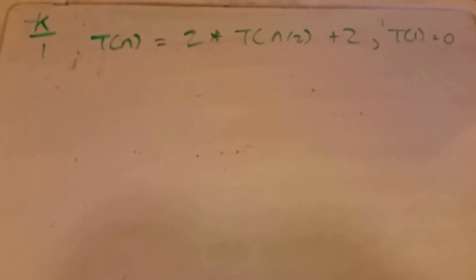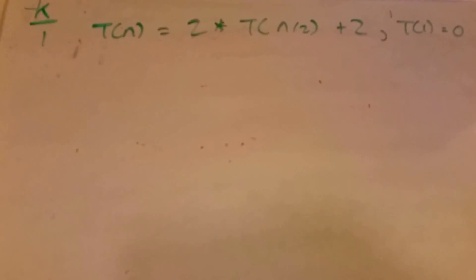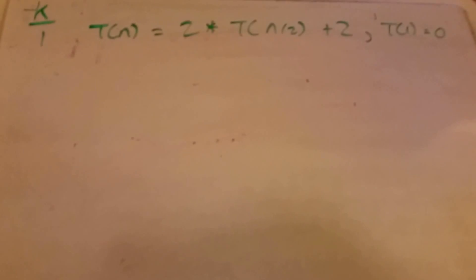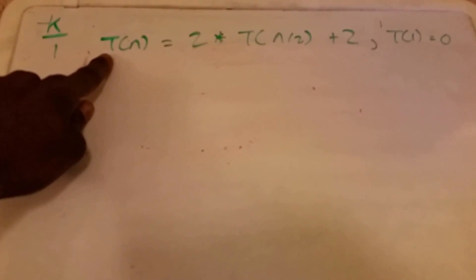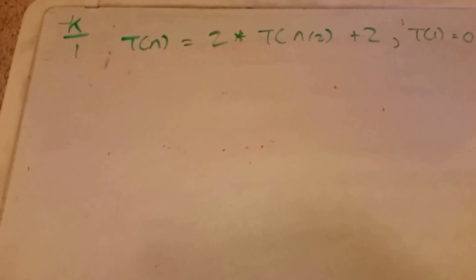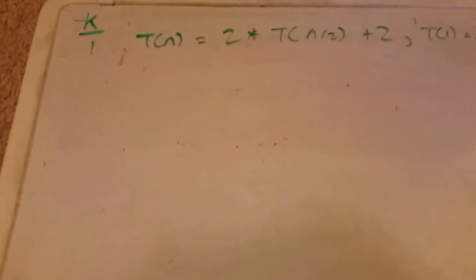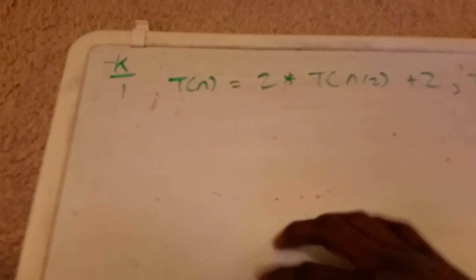This is a correction of my recurrence proof video. This is a recurrence proof by substitution, and we're going to find the running time of this function. T means time here, so this is a function of time — that's the reason why you have that.